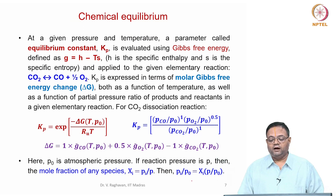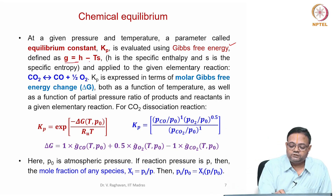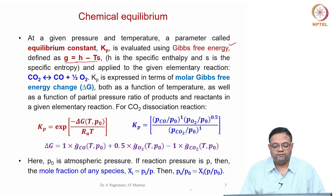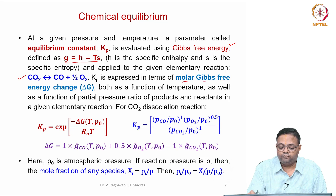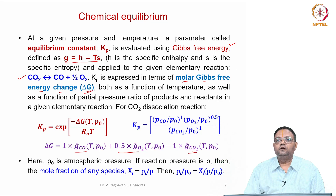To invoke chemical equilibrium, we define Gibbs free energy G = H − TS, where G is Gibbs free energy, H is specific enthalpy, and S is entropy. For a given elementary reaction, we find the molar Gibbs free energy change, ΔG, which is the Gibbs free energy of the products minus that of the reactants, expressed on a per kilo mole basis.